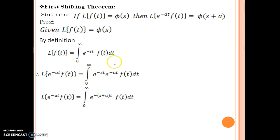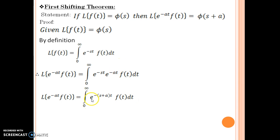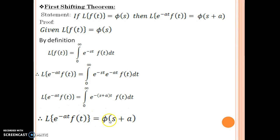As we made an observation earlier, whatever is between minus and t — that is this s — is what is carried over into phi(s) to represent this integral. If you now observe, this integral is again the same: 0 to infinity, f(t) is there, dt exists. And now in the exponent of e you have minus, and t, and in between minus and t what exists is s plus a. So if I want to represent this integral in terms of phi, I would represent it as phi of s plus a.